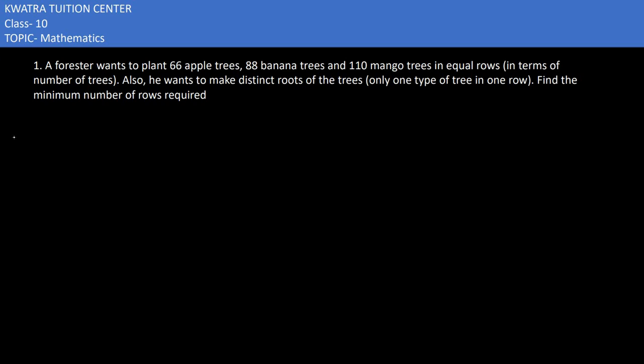A forester wants to plant 66 apple trees, 88 banana trees, and 110 mango trees in equal rows. We ensure that rows are equal. Also, he wants to make distinct groups of the trees - only one type of tree in one row. Find the minimum number of rows required.